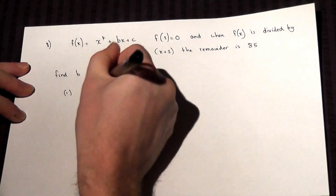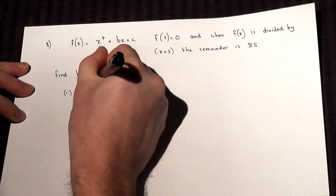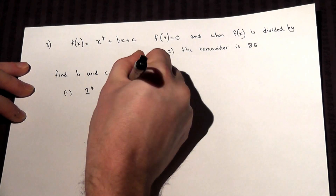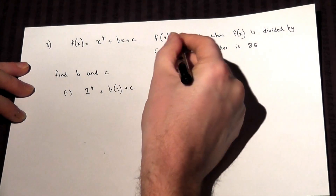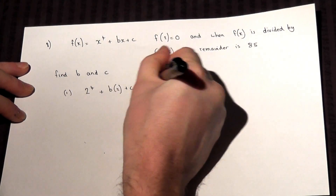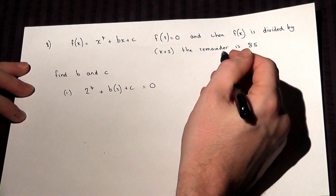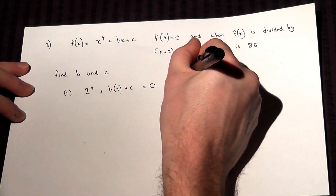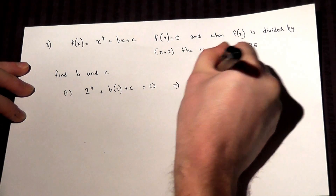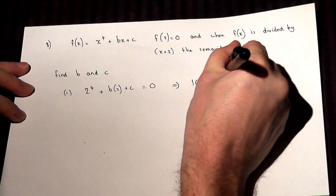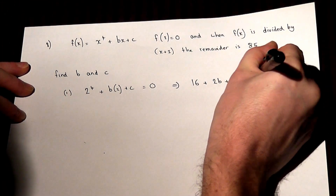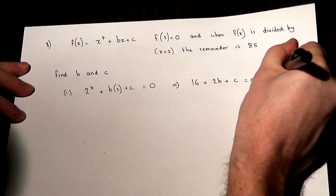So 2 to the power of 4 plus b lots of 2 plus c must equal 0. Now, 2 to the power of 4 is 16, so 16 plus 2b plus c must equal 0. That's equation 1.